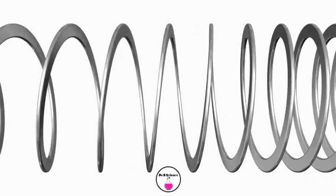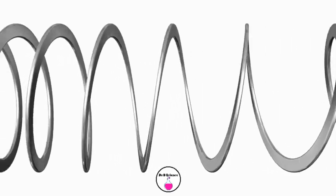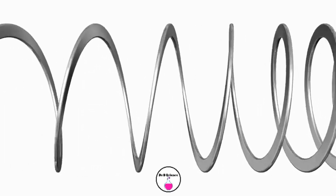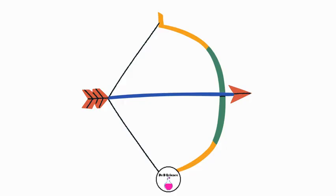Elastic potential energy is energy stored when objects are compressed or stretched, like a coiled spring or a pulled bowstring.